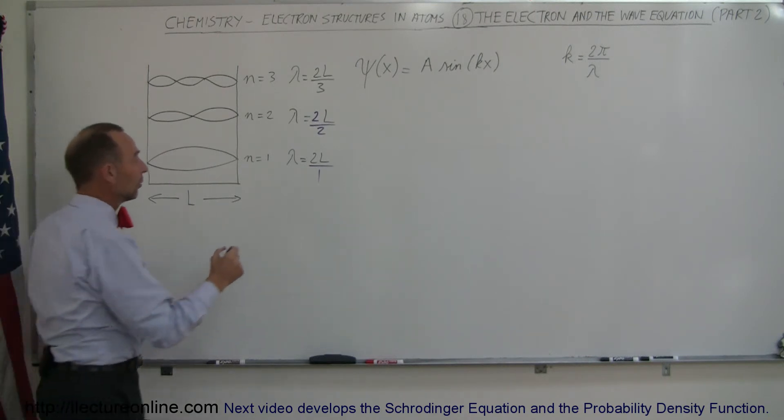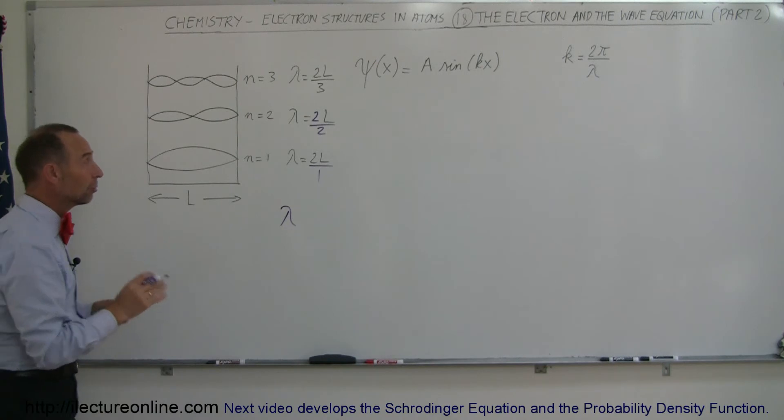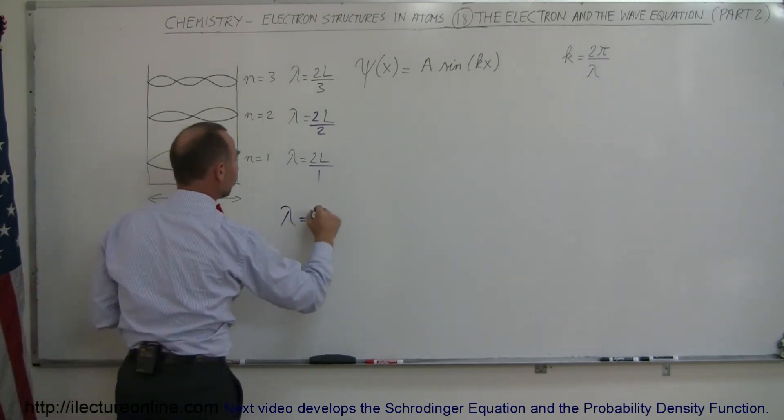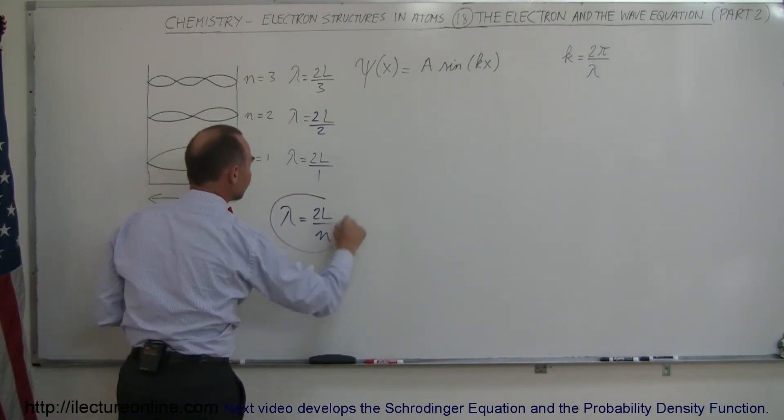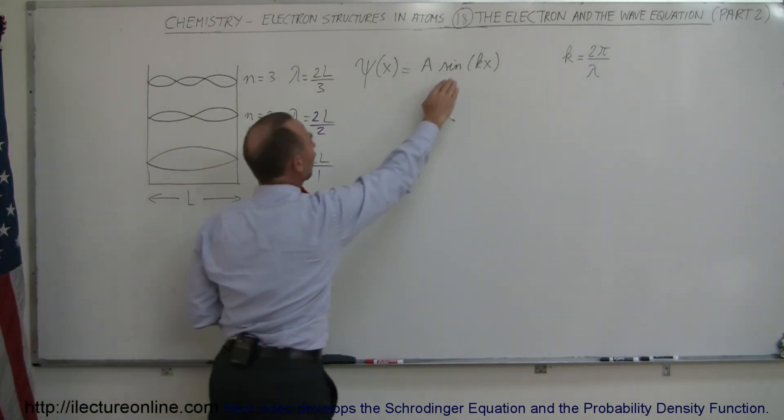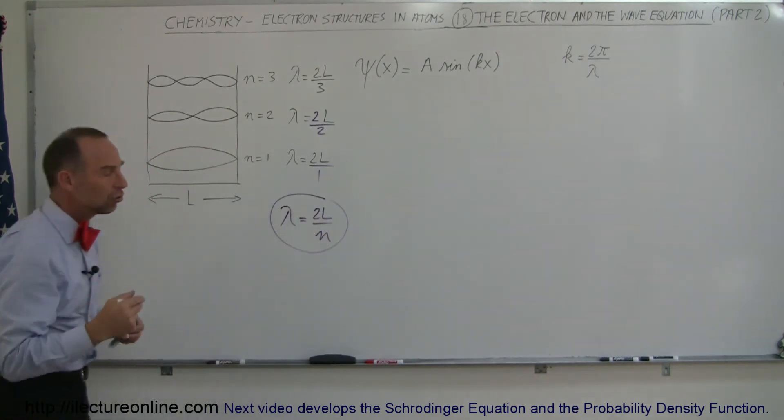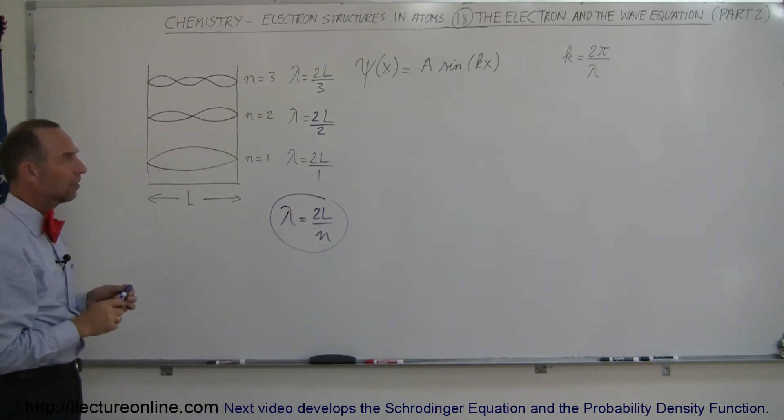So in other words, we can then say in general that the wavelength of an electron in a one-dimensional box always will be equal to 2L divided by the energy level that it's in. And so that allows us then to adapt this equation by substituting for lambda, 2L over the energy level, the quantum level n that it's in.